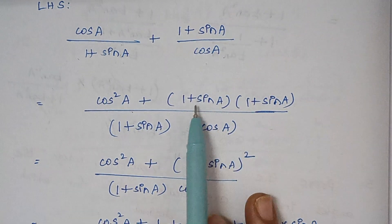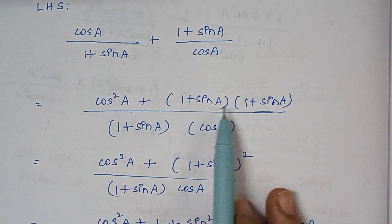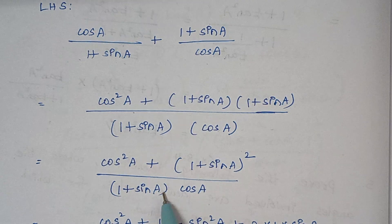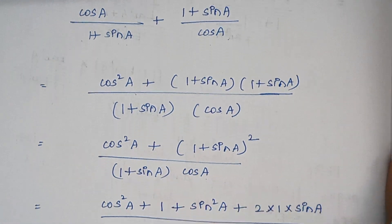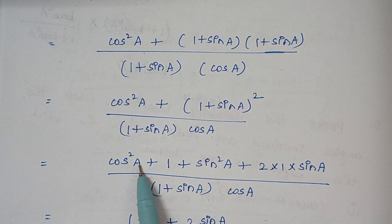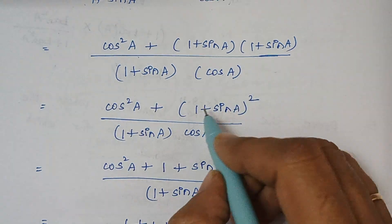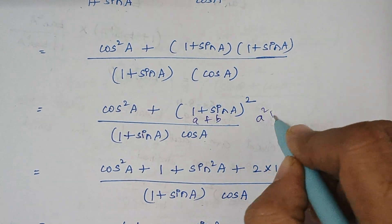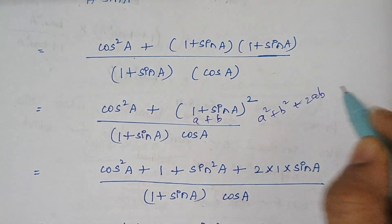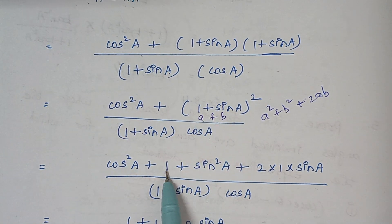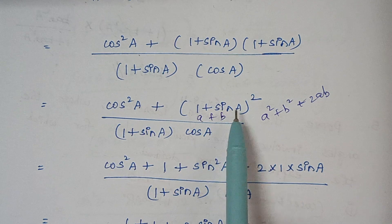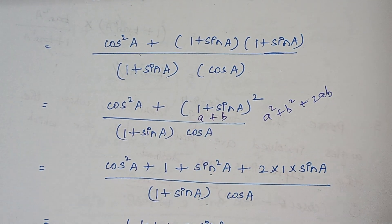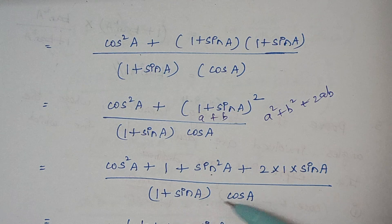Now since we are having the same terms, 1 plus sin a into 1 plus sin a, this becomes 1 plus sin a the whole square, divided by 1 plus sin a into cos a. We keep cos square a as such and expand 1 plus sin a the whole square using a square plus b square plus 2ab: so 1 square is 1, plus sin square a, plus 2 into 1 into sin a. The denominator term remains as such.